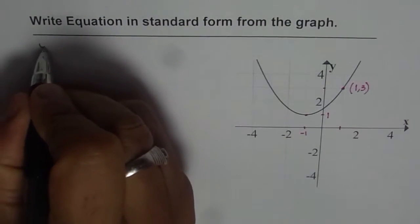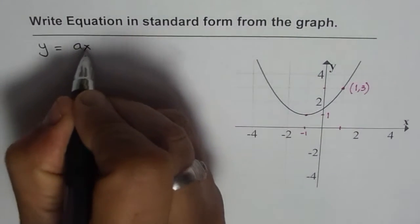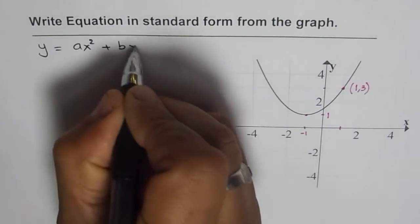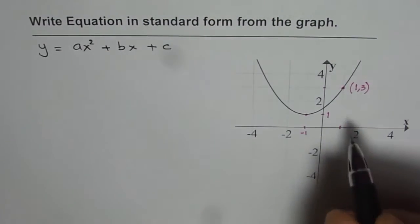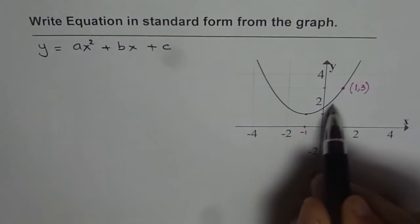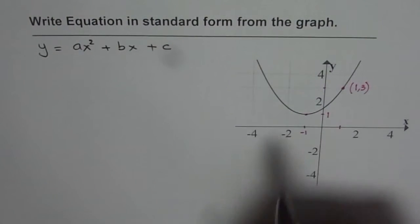In standard form means y equals ax squared plus bx plus c. Now to begin with, we should always start with the vertex form of the equation, especially when we are given the vertex.